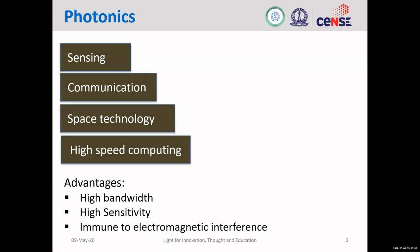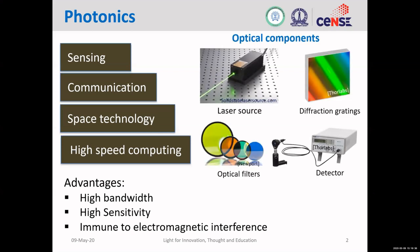High bandwidth — a good example is the very fast internet we have nowadays, which is one example of photonics being used in daily life. In sensing, photonics offers some of the most sensitive techniques to measure different types of gases and chemicals. And finally, photonic devices are immune to electromagnetic interference. These different applications are achieved by combining different optical components.